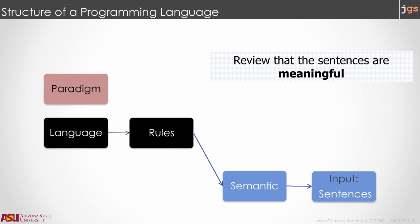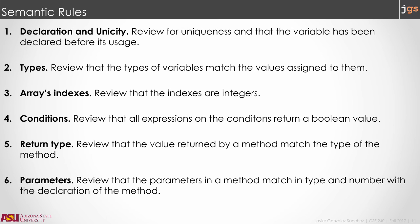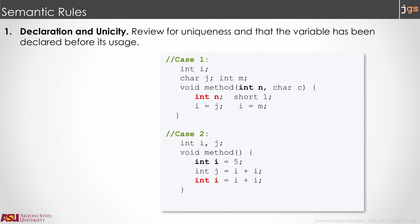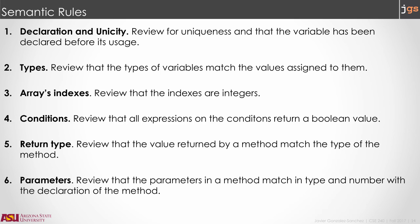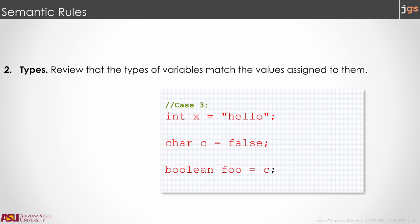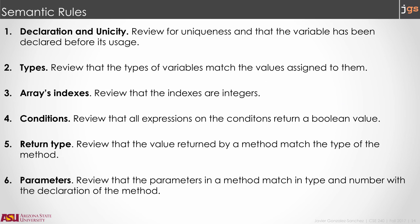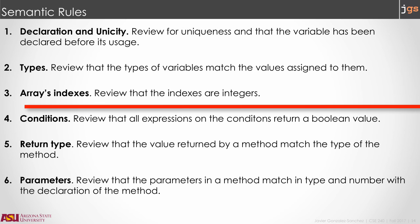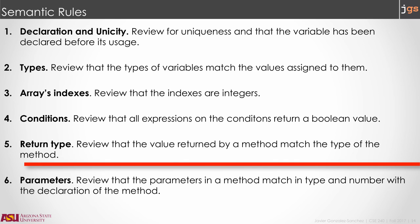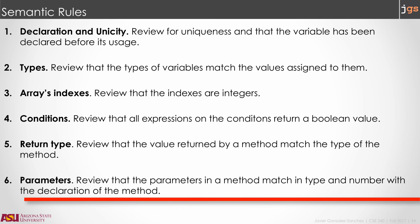The last set of rules are the semantic rules. Semantic rules review if sentences that are syntactically correct have a meaning in the language. For instance, you can declare a variable only one time — you cannot have two variables with the same name in the same function. Semantic rules also check that types match between variables and values, that array indices are integers, that conditions in if or loop statements are boolean values, that a function has a return type matching its declaration, and that functions are called with the correct number of parameters.